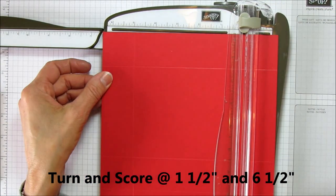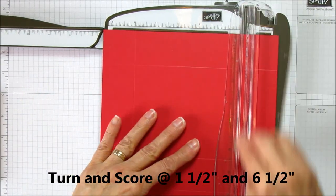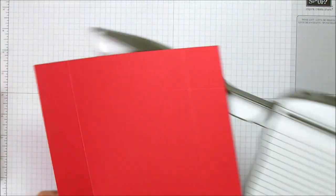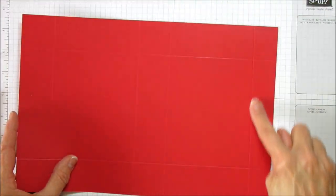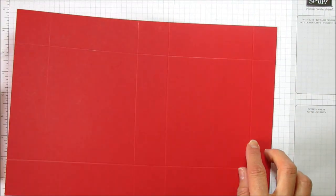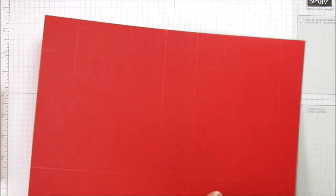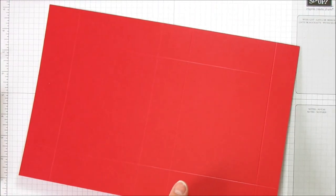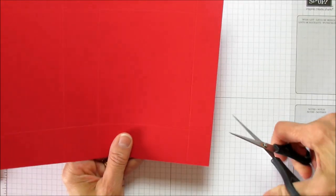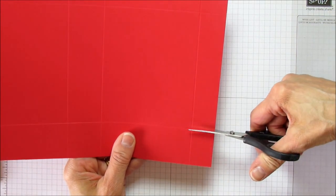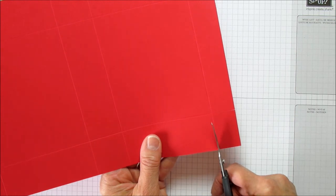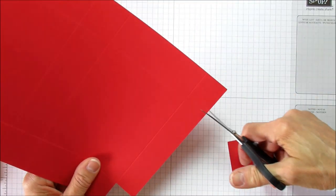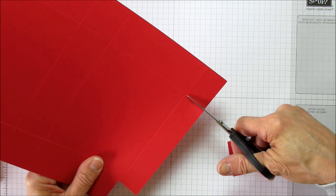The shorter side here is going to be where our little flap is. Let me grab my scissors and we are going to just cut off this little corner here, and then we'll cut this corner off on this side.